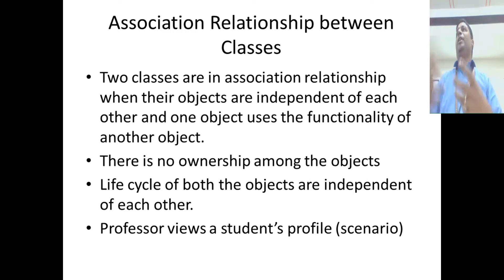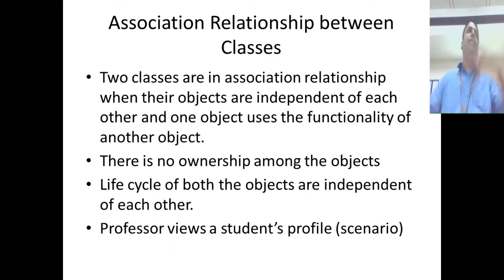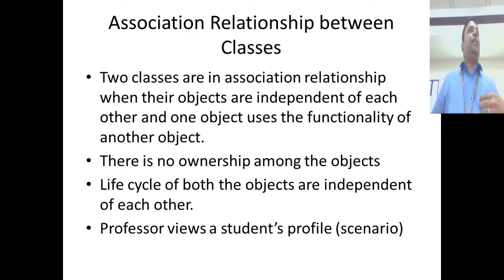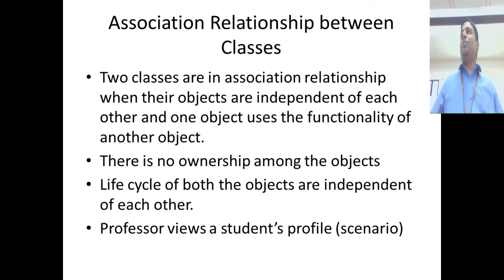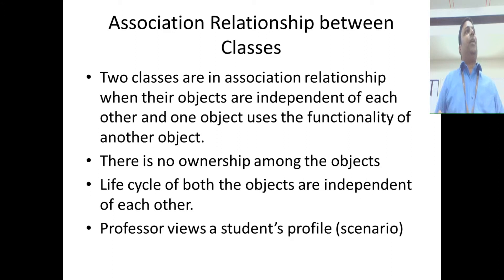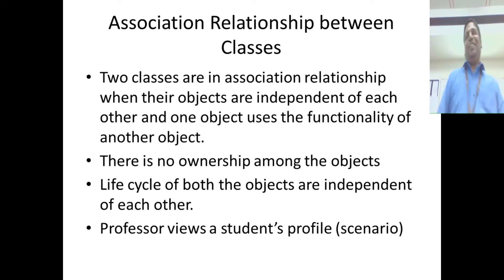Although their lifetimes are independent, they are somehow related. That relationship means: somewhere I am using the methods or functionality of one object inside another object — that is called association. For example, as a teacher I can view the profile of any student in the university, but I am not permanently related to that student. The teacher object can view the profile of the student object, but the lifetime of both objects is totally independent inside the system.